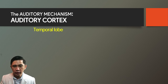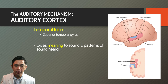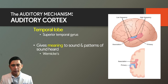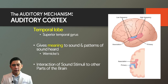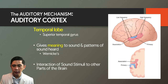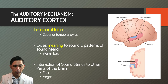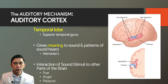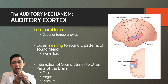Sound eventually reaches the temporal lobe in the superior temporal gyrus—the auditory cortex—which gives meaning to sounds and patterns. This is particularly present in Wernicke's area. The auditory cortex has primary and association areas. The primary auditory cortex receives sounds, and the association auditory cortex further processes them, giving meaning such as fear from ghost sounds, anger from shouting, or pleasure from music.